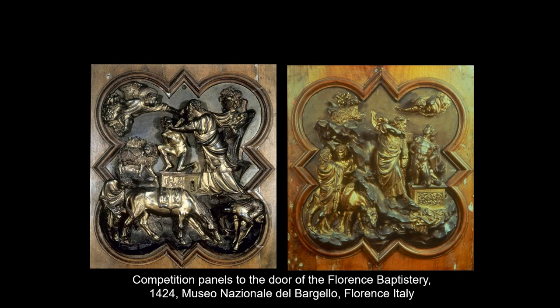Dozens of artists competed but it came down to two. They were given a subject: the sacrifice of Isaac by Abraham. These test panels have a wonderful quatrefoil pattern — a pretty Gothic pattern — still following conventions of the previous era. The story is a test of Abraham: ordered to sacrifice his only son, he is stopped at the last moment when an angel comes and grabs his hand. Both panels were considered very, very good — in both you see Abraham in the middle, the knife against Isaac's throat, and the angel flying in to stop him.